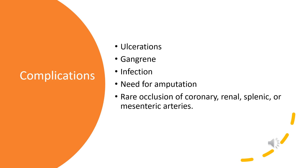Complications: impaired blood flow in the affected limbs may result in skin ulcerations. Tissue can become necrotic and gangrenous with superimposed infection, which may necessitate amputation. Rarely, Buerger's Disease can affect visceral blood vessels, potentially leading to coronary, renal, splenic, or mesenteric ischemia.